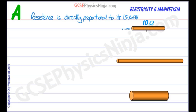OK. So if you double the length then you're going to double the number of collisions of these electrons with the positive metal ions. And so you have double the energy loss. So that's why the resistance doubles if you double the length.